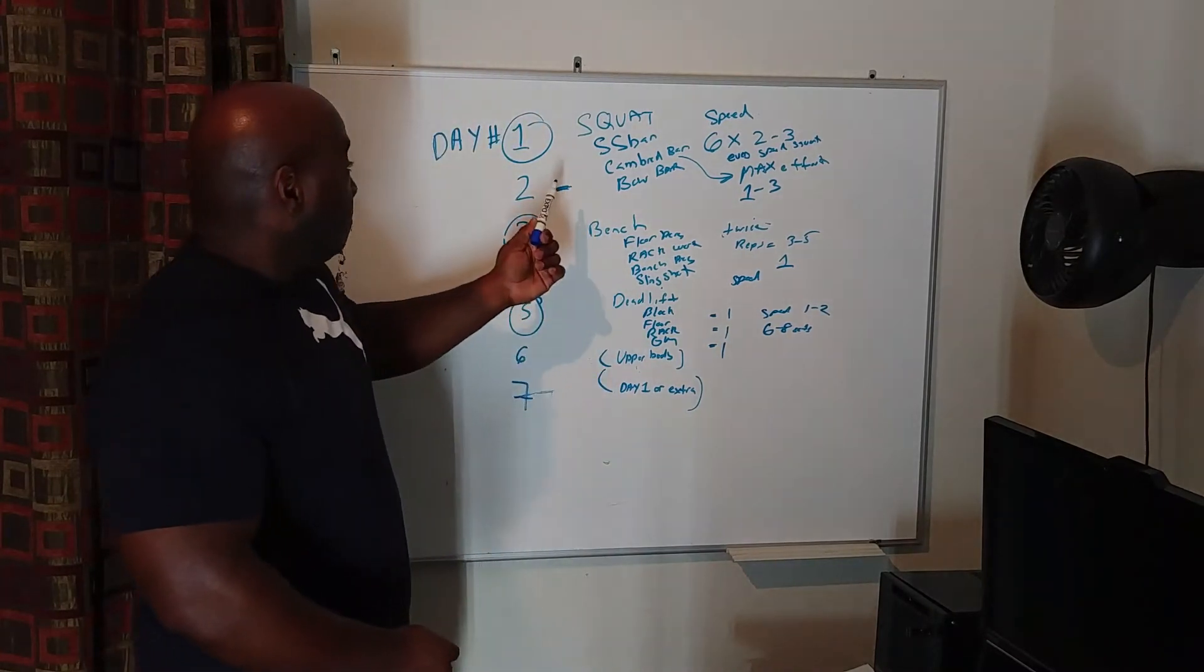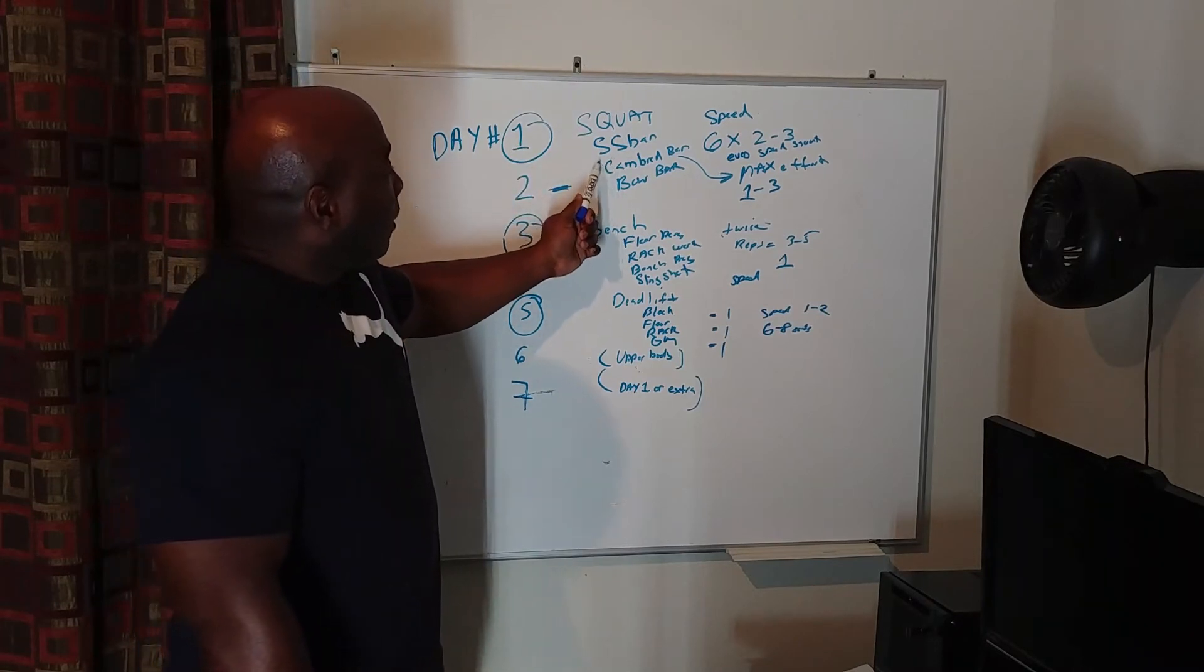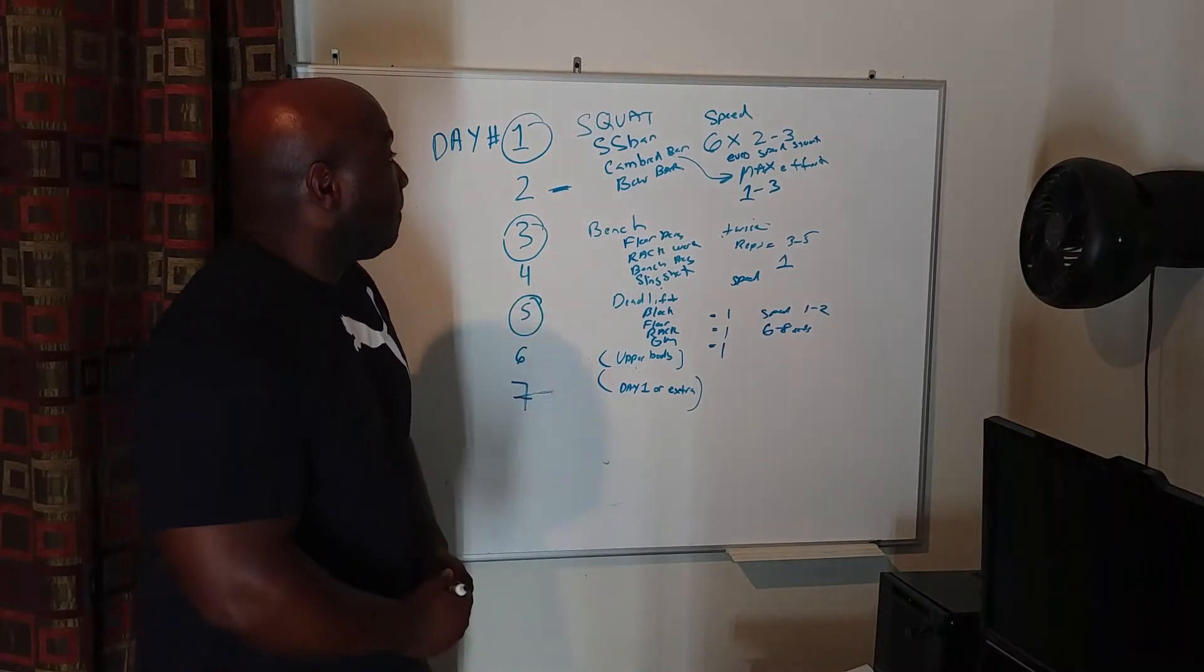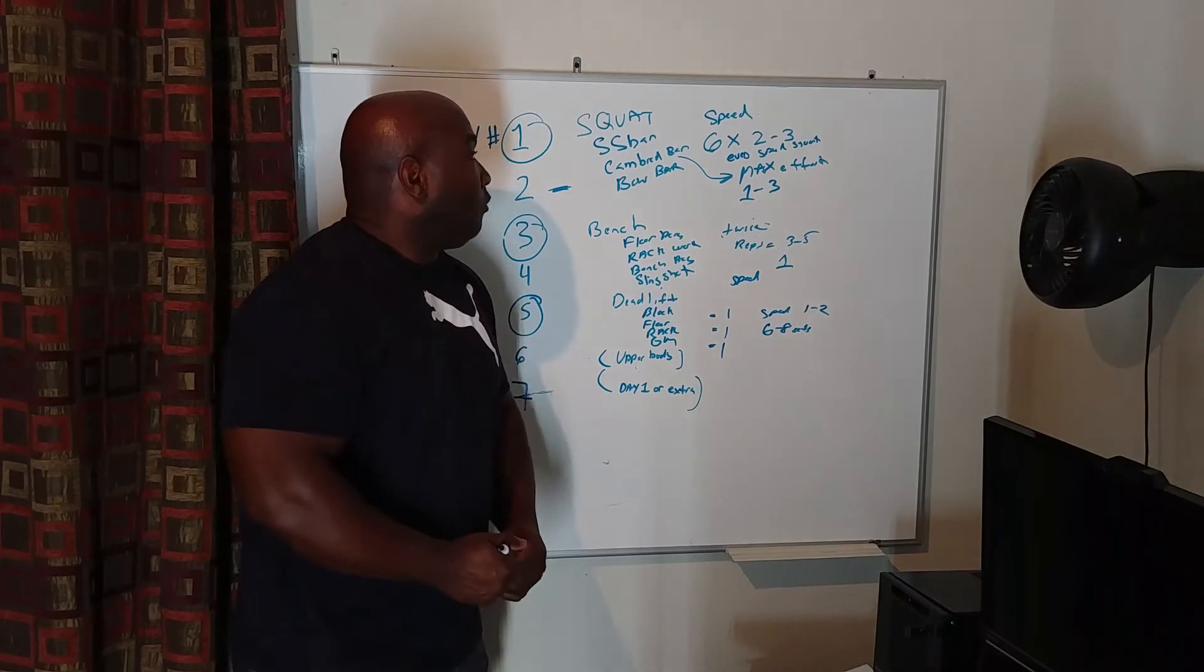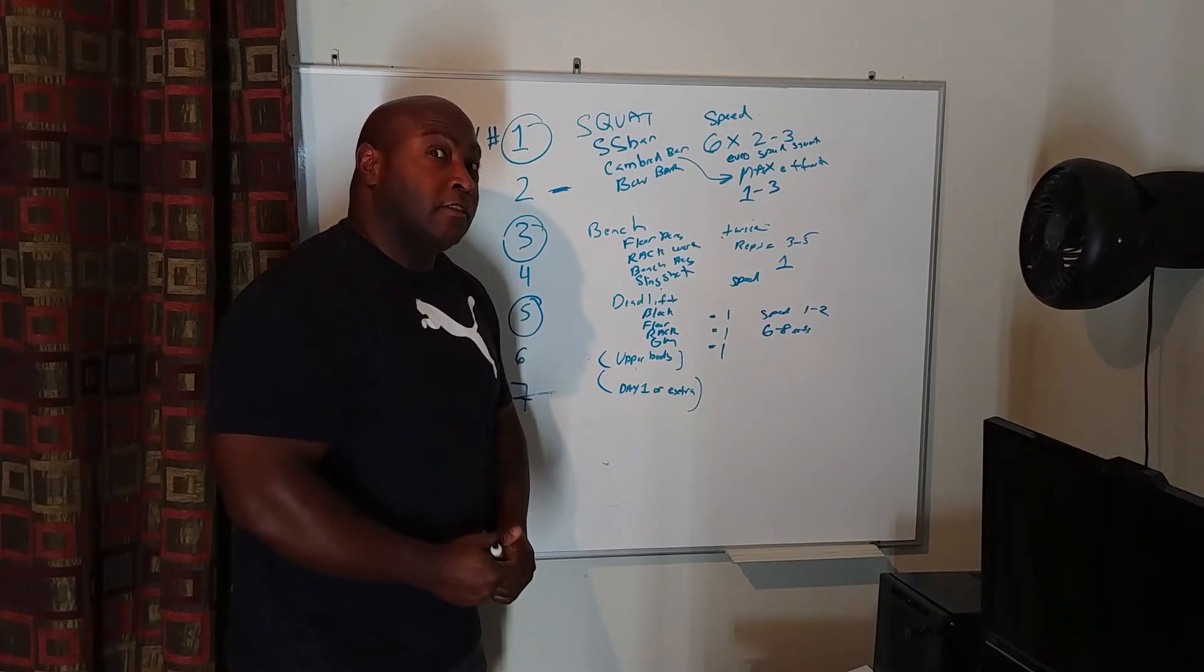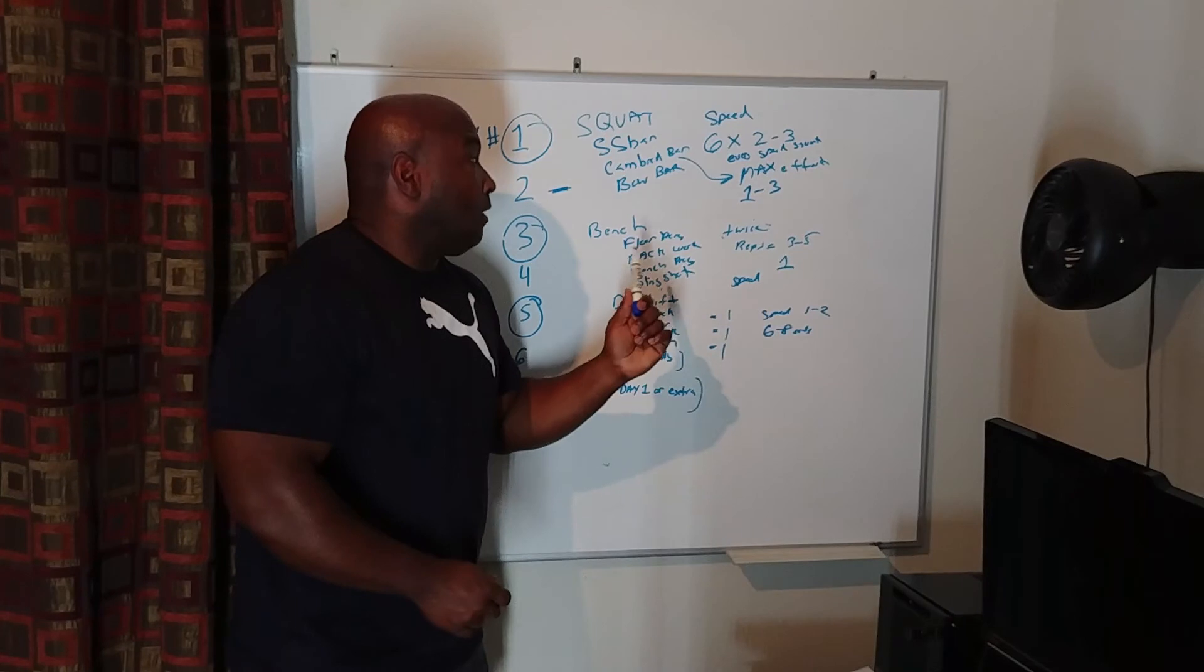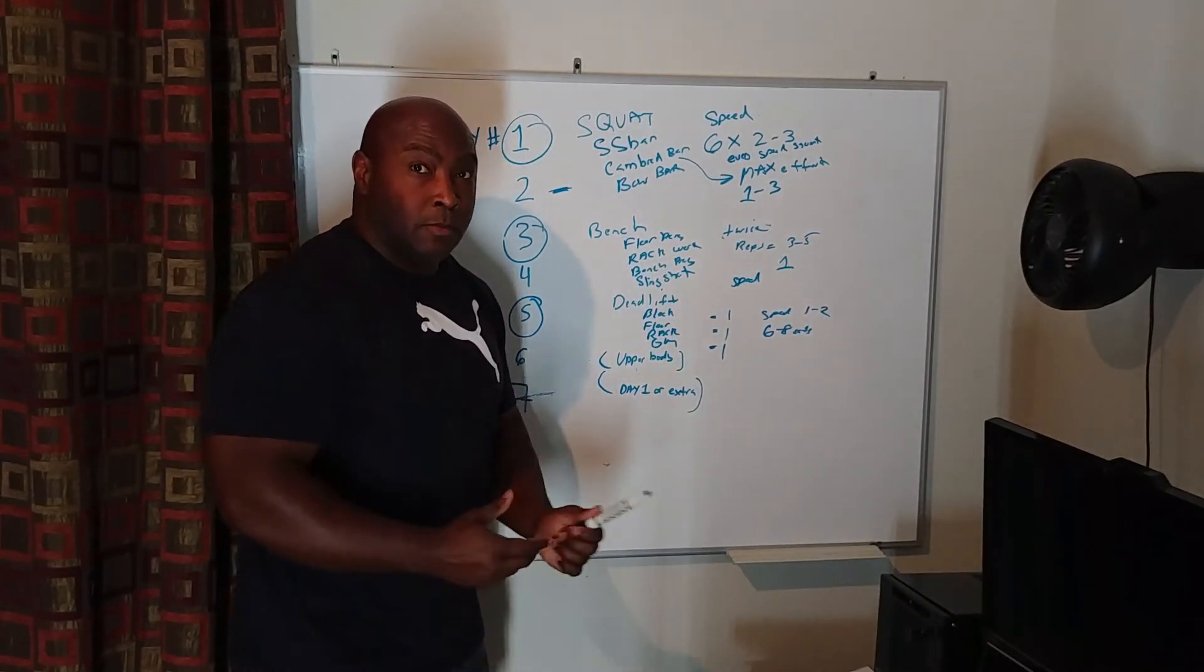On day one, there's usually a type of squat movement, so it's a safety squat bar movement, a camber bar, or a bow bar, and I can use bands or chains or straight weight. I usually do speed every other week for six sets of two to three reps, and I do maximum effort every other week for one to three reps, depending on how I feel.